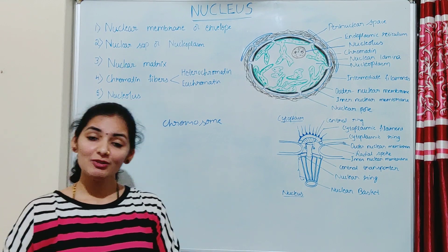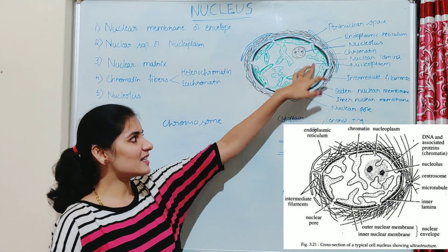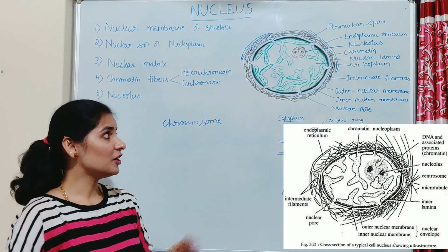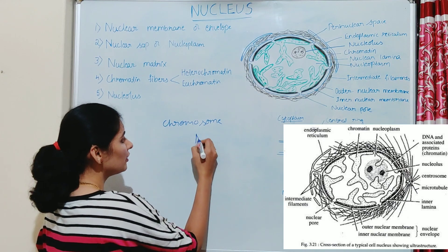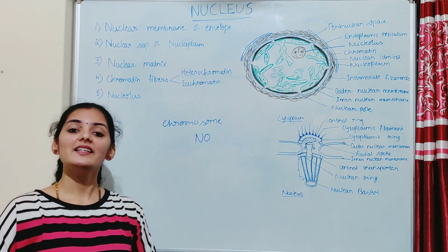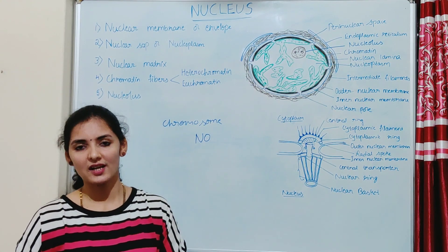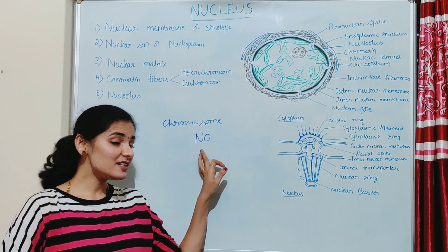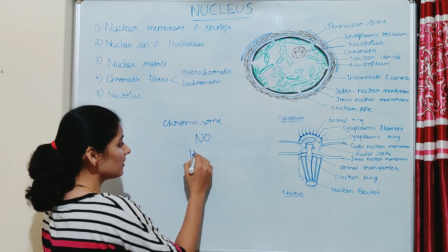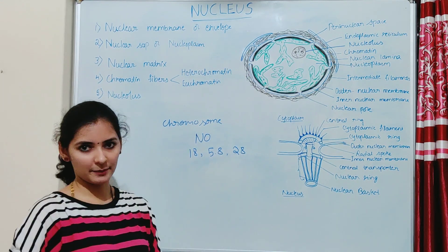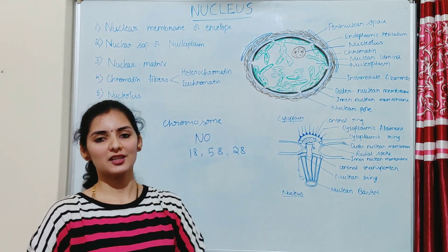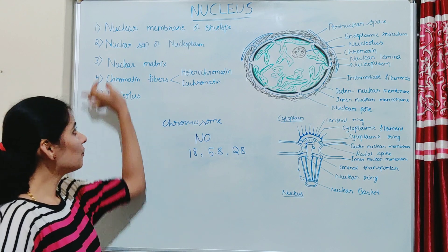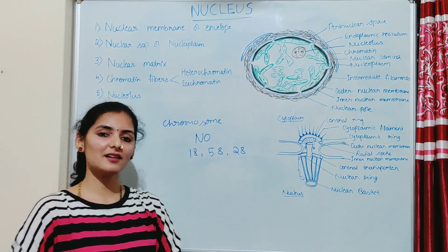The fifth component is the nucleolus — a spherical colloidal body present inside the nucleus, usually in an eccentric position. The nucleolus is associated with the nucleolar organizer, a secondary constriction present in some chromosomes. In humans, it is present in five chromosomes: the 13th, 14th, 15th, 21st, and 22nd. The nucleolar organizer has genes for 18S, 5.8S, and 28S rRNA. Therefore, the main function of the nucleolus is the biosynthesis of ribosomal subunits. That covers all five components of the nucleus explaining its ultrastructure.